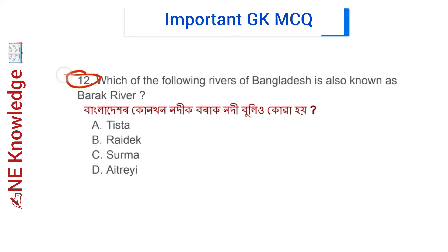Question number 12: Which of the following rivers of Bangladesh is known as the Barak River? Options: Teesta, Raidak, Surma, and Atrai. Correct answer: Option C — Surma. The Surma River is also called the Barak River in Bangladesh.